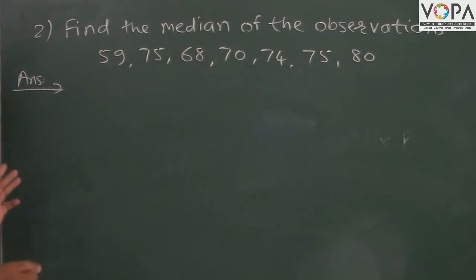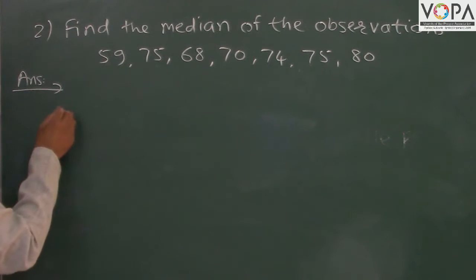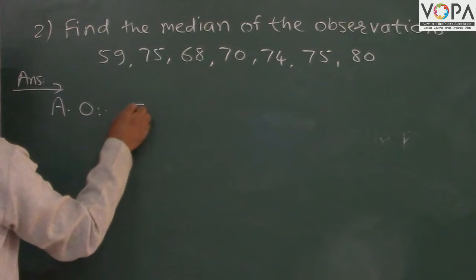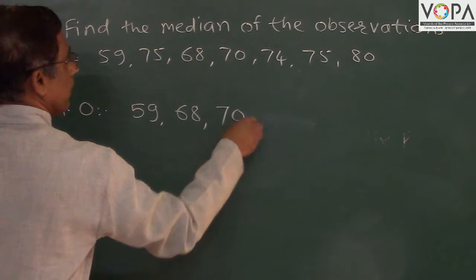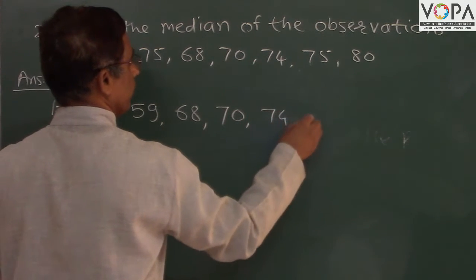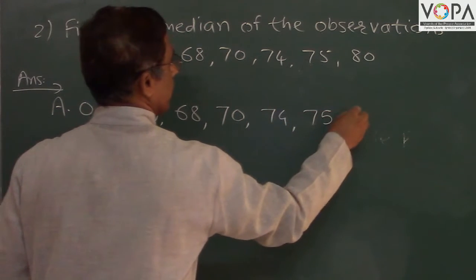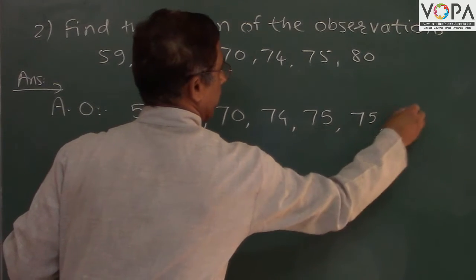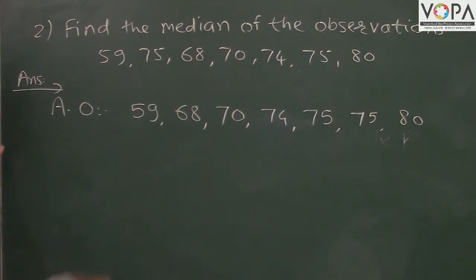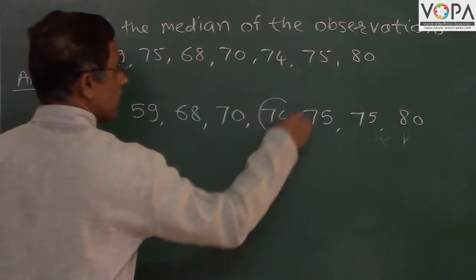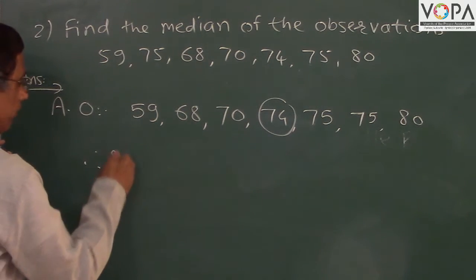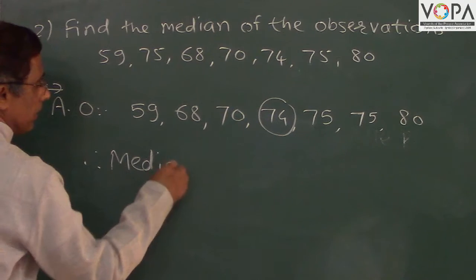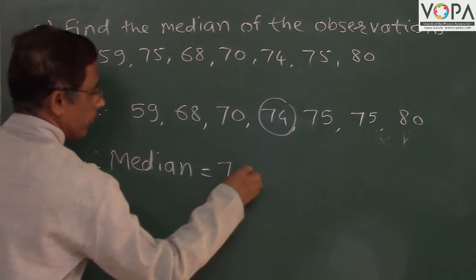First step is to write in ascending order. So 59, 68, 70, 74, 75, 75, 80. Now the middle is 74. So median is equal to 74.